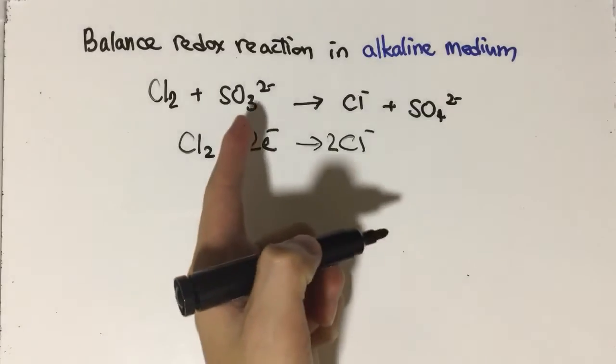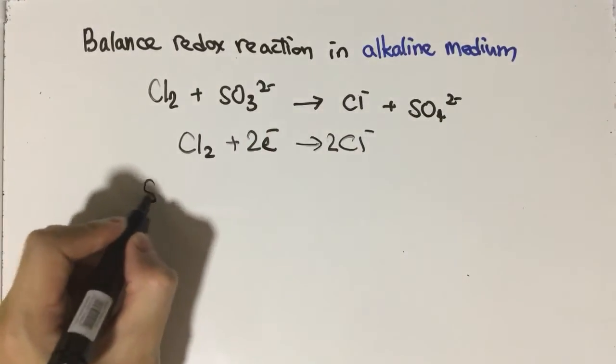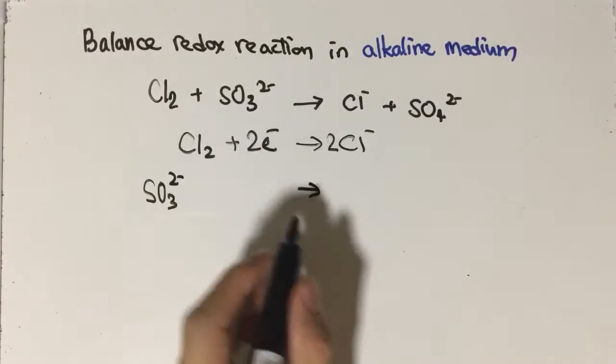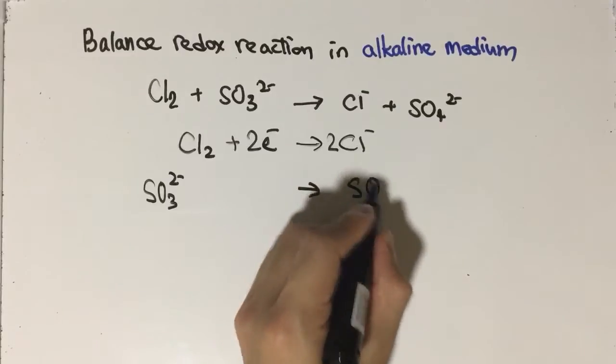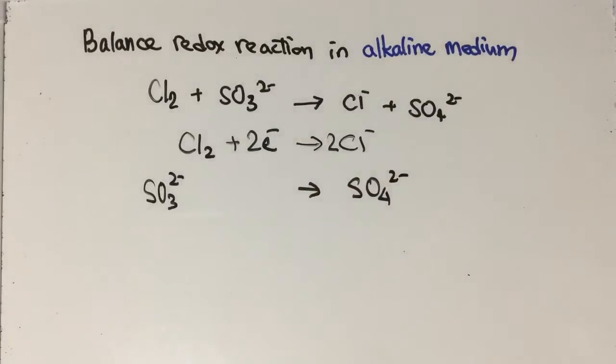Secondly, it comes to sulfite ion becoming sulfate ion. This one will be rather tricky but it is also very simple. Firstly, write down the reactant and product.